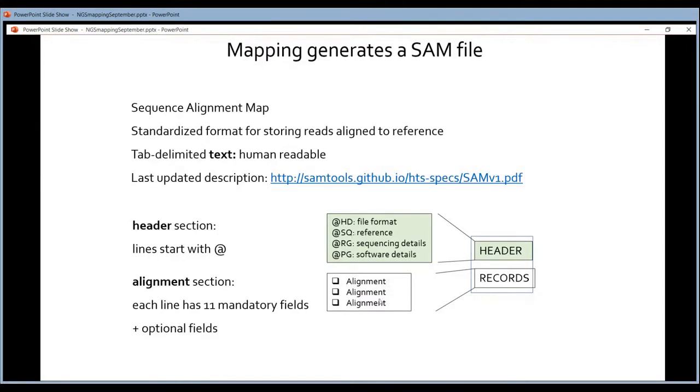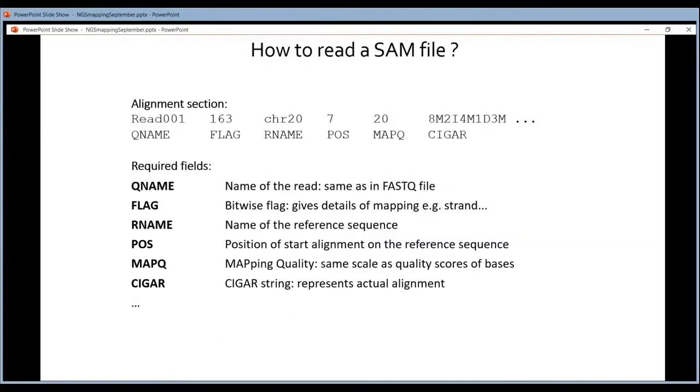After the header you have the actual alignments. What do the alignments look like? You can find them here. This part I've already mentioned previously. This is the part that tells you the information of the mapping. What do you see here? You will get a name for every read. So that's still the location of the cluster on the flow cell. You will get a flag that tells you more about the details of the mapping.